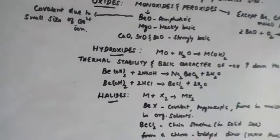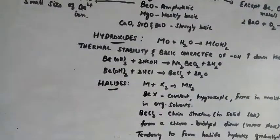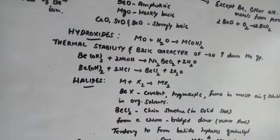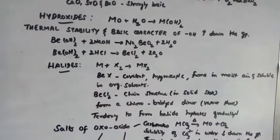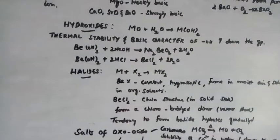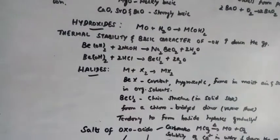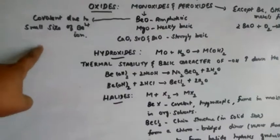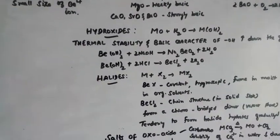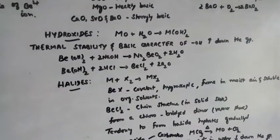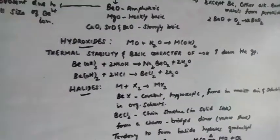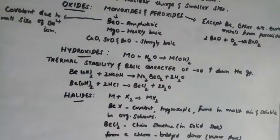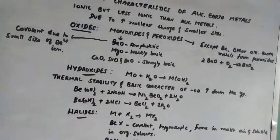Now let us see halides. Halides are formed by treating alkaline earth metal with halogen. Beryllium halide is covalent in nature due to the small size of the beryllium ion. It is hygroscopic and even fumes in moisture. It is also soluble in organic solvents.